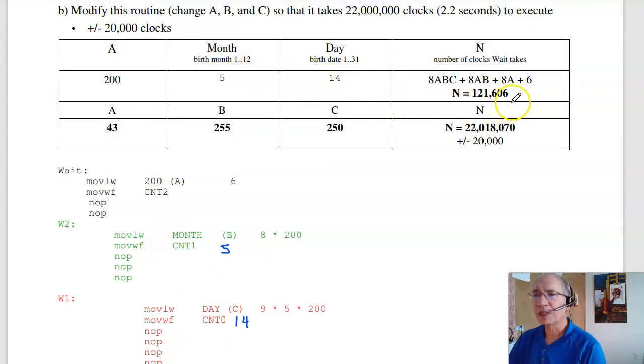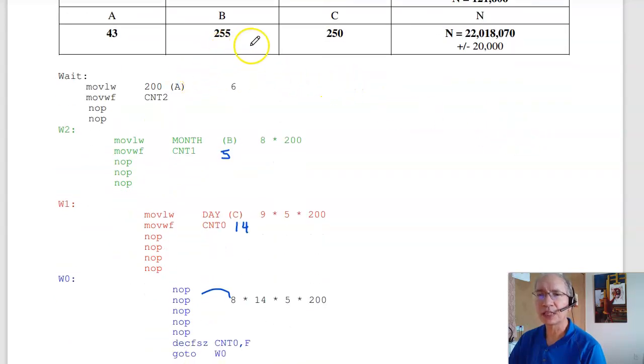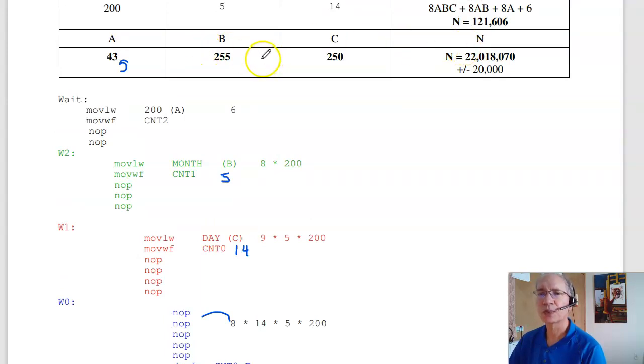Multiply it out. Add them all up. 121,606 clocks. Now to get that to be 22 million, what I would do is let's make everything 255. Solve for A, and I'll get I think 43.1, something like that. Round down, or 42.8 round up. If I make A a little bit too big, one of these numbers needs to get smaller. So given A and B, now solve for C. If I do that, I get 22,018,000 within the tolerance. So that's one solution. There's many others.